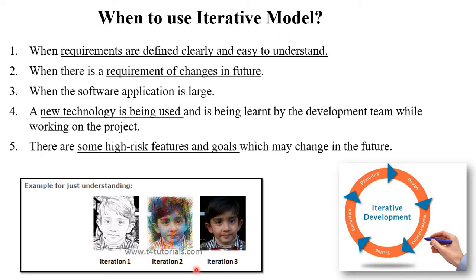Let's see an example for understanding. In iteration one, there is an image but it does not have enough accuracy or color representation. So it moves to iteration two. Again that image still does not have the required accuracy. Then they move to iteration three. In iteration three, there is accuracy and correct colors in the image. So this is the final product.